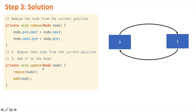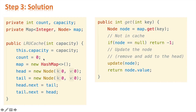The update function simply calls remove and then add. This is needed because when we access an item in the cache, we first remove it from its current position and then add it to the head. The update function combines these two operations. Finally, we come to the LRU Cache itself. We have count and capacity to track the cache size, and a map to store key-node pairs for O(1) get.